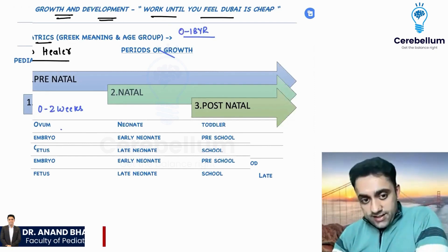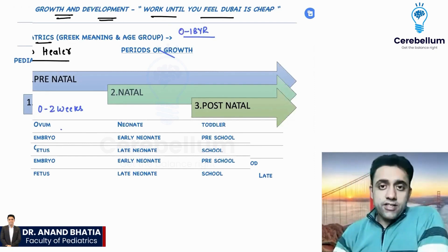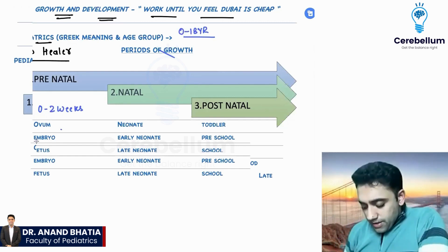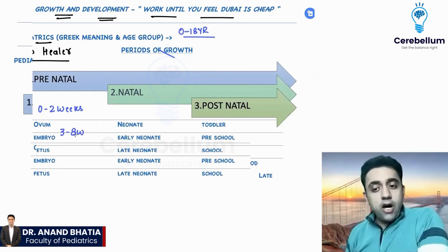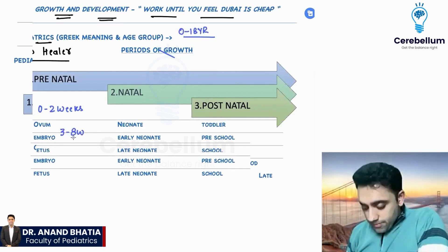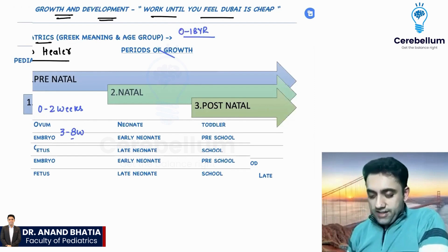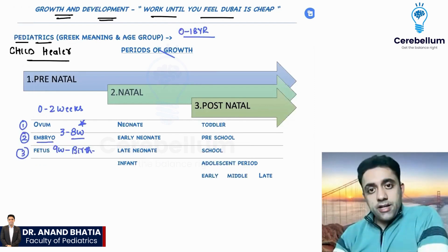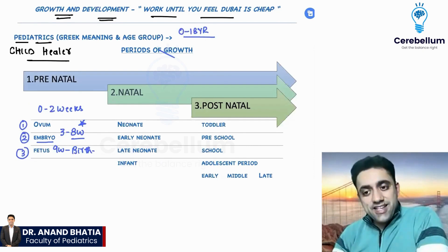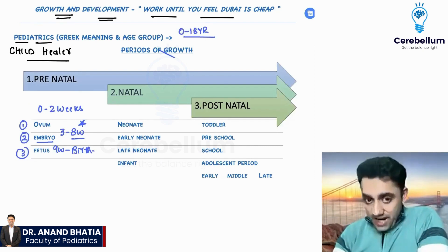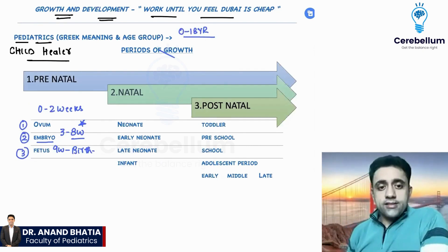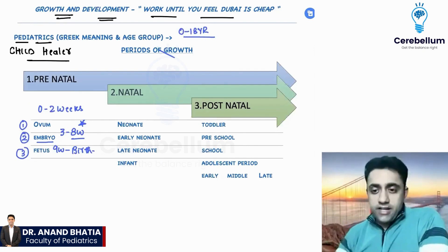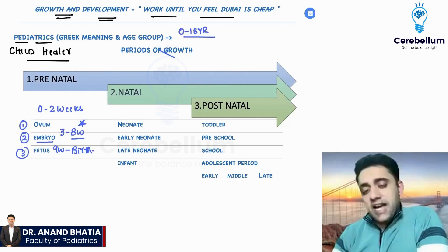This was a NEET PG question: the embryonic period is till how many weeks? The embryonic period is till eight weeks of life. So zero to two weeks is ovum, three to eight weeks is embryo.